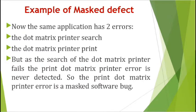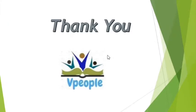Applying the same example to the masked defect: the search defect of the dot matrix printer is hiding the printer error. So the masked defect here is the printer error — that is why it is called a masked defect. Thank you so much for listening to this video.